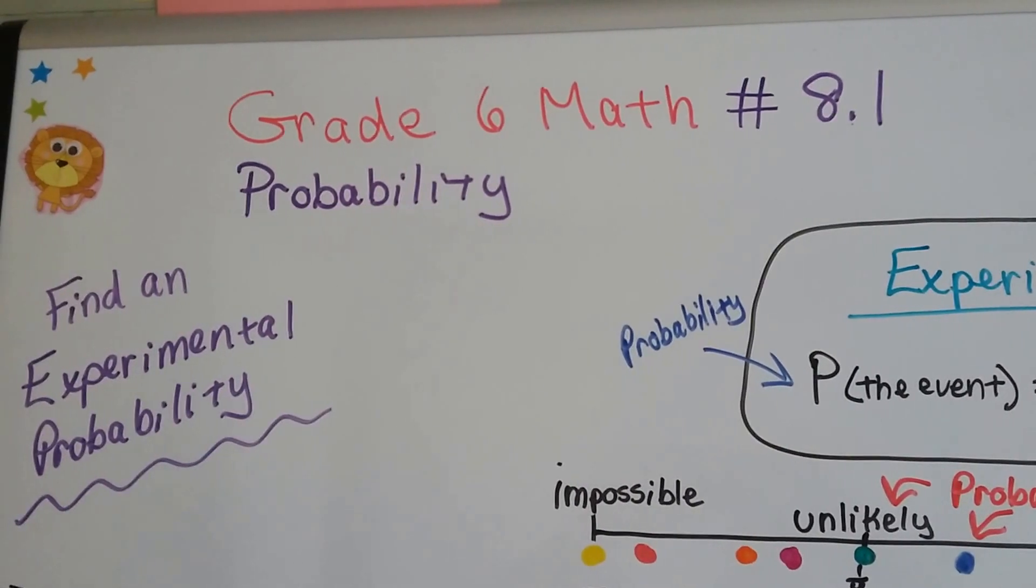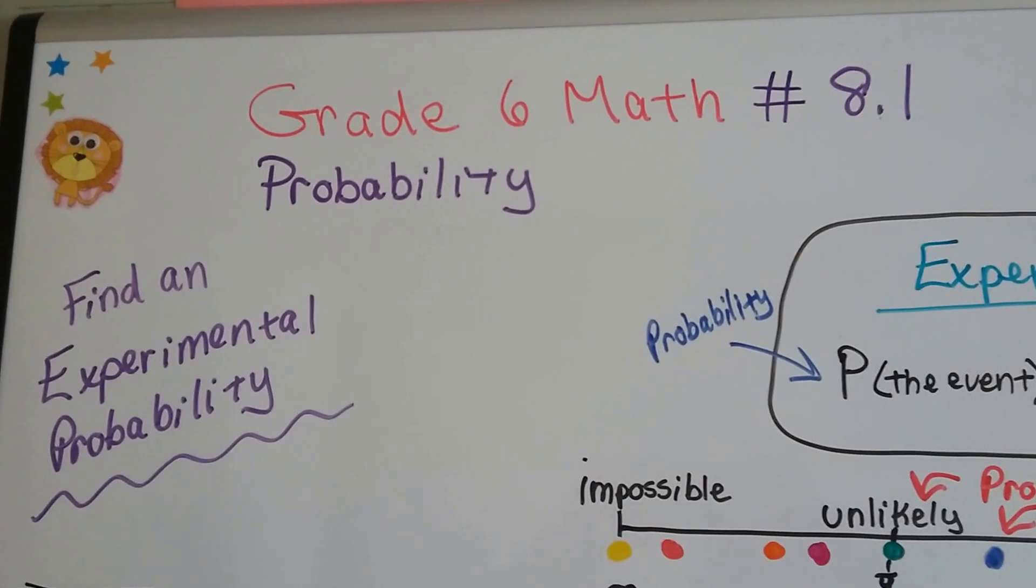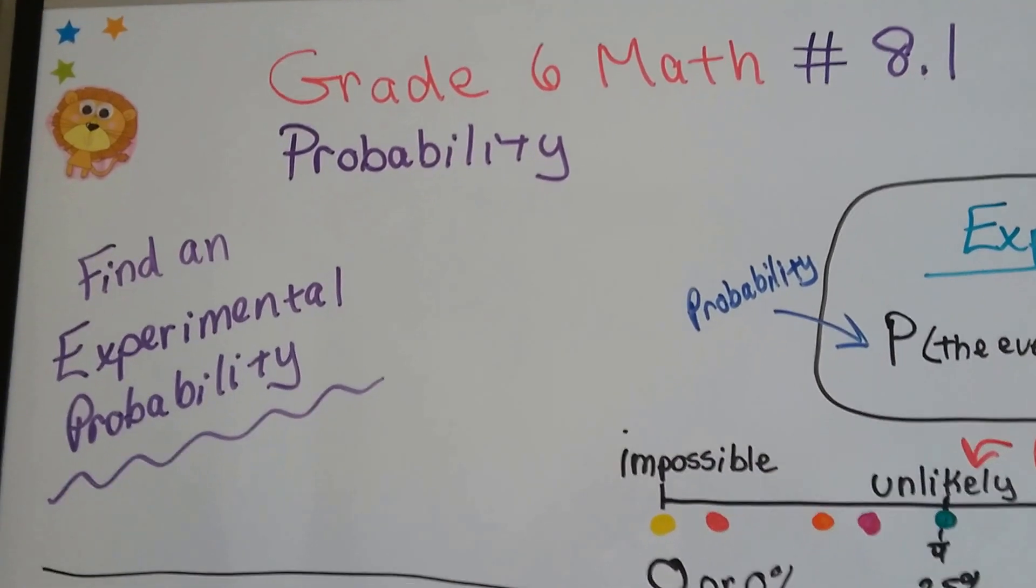Grade 6 math number 8.1. This chapter is on probability. We're going to find an experimental probability.